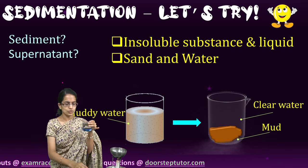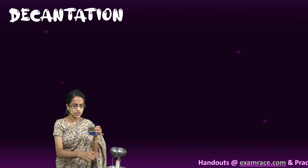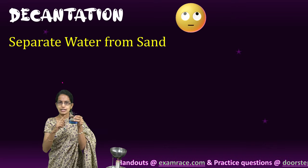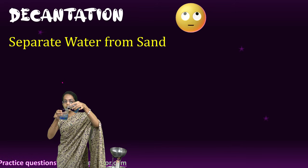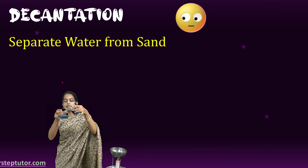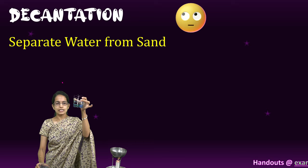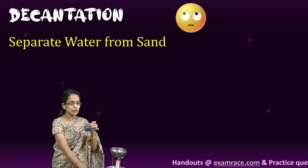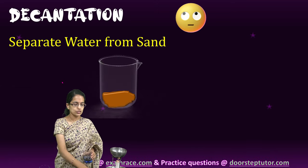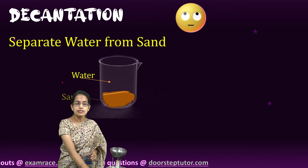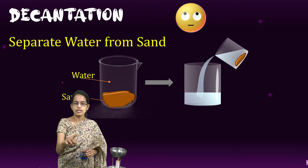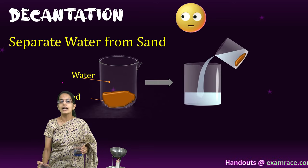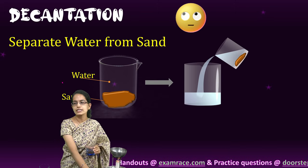Now let's carry forward the same example to understand decantation. Once we have separated the two things based on solubility, I can simply take the clear water and pour it into another beaker. This gives me clear water separately, and all the sediments remain behind. This is the process of decantation. Here you can see the muddy water and the clear water obtained from sedimentation — I pour it so all the water comes up here and the mud or insoluble impurities are left behind.